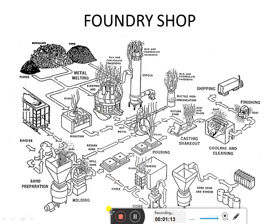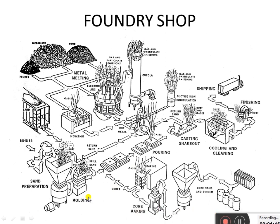This is a foundry shop. The different sections are: the mold section, the metal melting section, the core making section, the casting preparation area, the cooling and cleaning section, and the finishing section, after which the material is dispatched. In the metal melting process, the metal is melted and the molten metal is poured into the cavity — that is, into the patterns — creating a casting, which then goes through cooling, cleaning, finishing, and shipping.